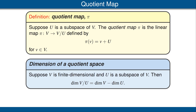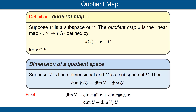Now we can find the dimension of a quotient space using this map π. Suppose V is finite dimensional and U is a subspace of V. Then the dimension of the quotient V/U equals the dimension of V minus the dimension of U. The proof applies the fundamental theorem of linear maps to π: dim(V) = dim(null π) + dim(range π). The null space of π is precisely U, and the range of π is the entire quotient space V/U. Solving gives dim(V/U) = dim(V) − dim(U).